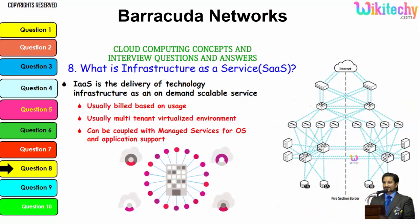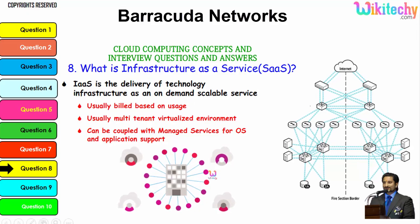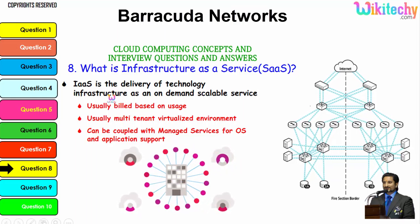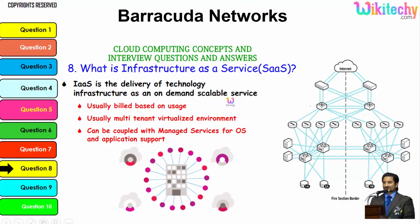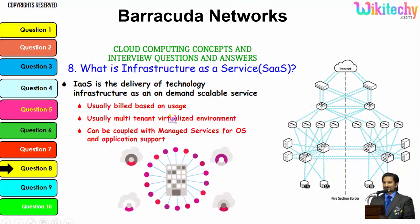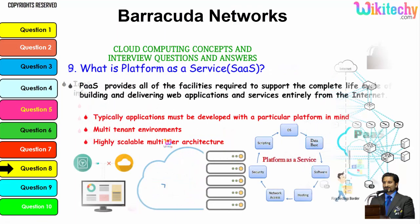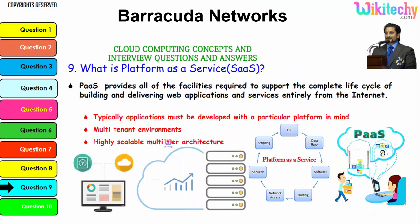Now let's talk about Infrastructure as a Service. You will be allocated your server, and you can install whatever OS and software you want. IaaS is a delivery of technology infrastructure as an on-demand, scalable service built based on usage, usually multi-tenant and virtualized. It can be coupled with managed services for OS and application support. Now here is Platform as a Service.